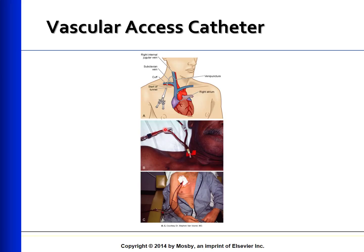This is a picture of the right internal jugular placement for a tunneled cuffed semi-permanent catheter. This shows the temporary hemodialysis catheter in place with the clamps visible, and this patient is using a long-term cuffed hemodialysis catheter.